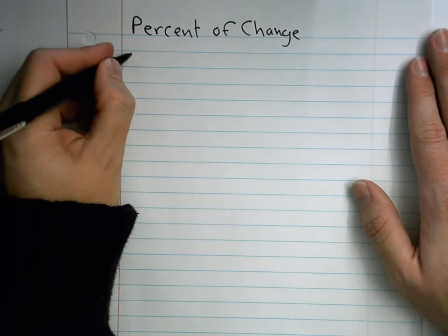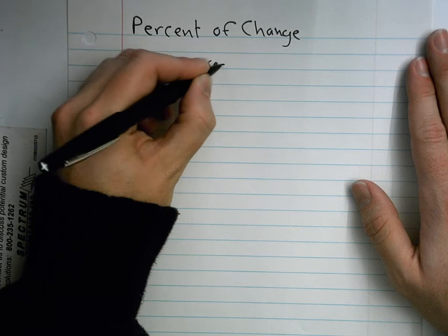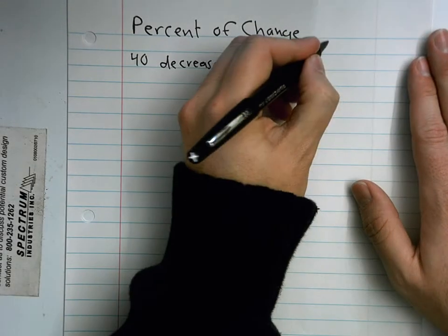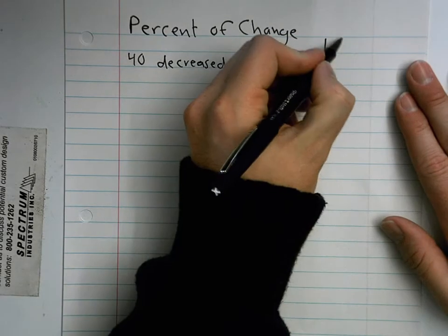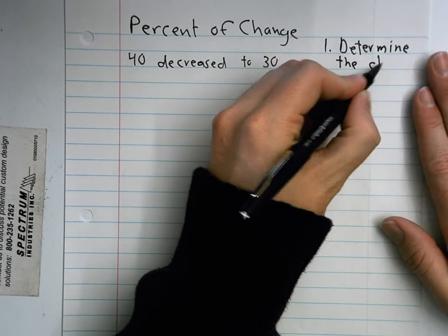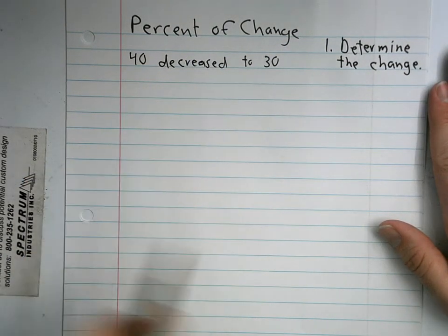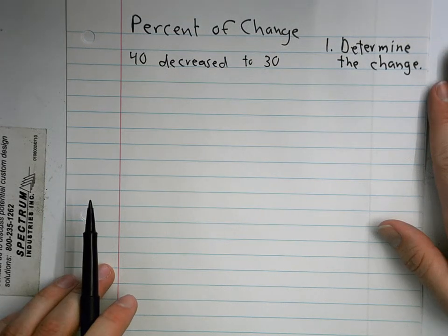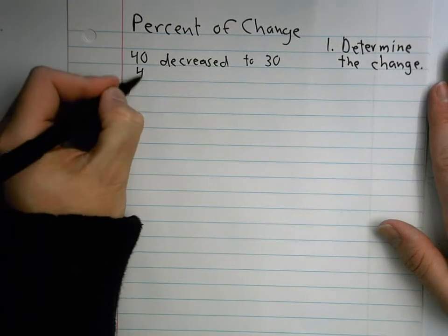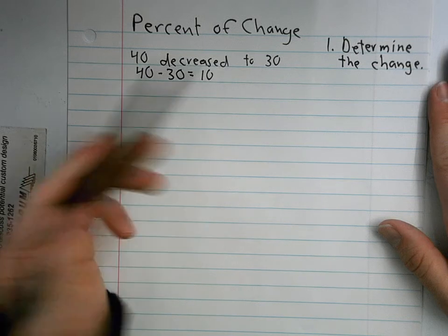Let's say we had 40 and it decreased to 30. Step one is to determine how much it changed. So how much did it change if it went from 40 to 30? McKenna, it changed by 10. You can just look at it and see, but we could always go 40 minus 30 equals 10. It decreased by 10.